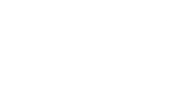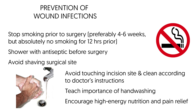The following are some ways to prevent wound infections. Teach the surgical patient to stop smoking four to six weeks before surgery; if they cannot quit, there is absolutely no smoking for 12 hours before surgery. The patient should shower before the operation using antiseptic soap recommended by the doctor and avoid shaving the skin area where the operation will occur. Following surgery, the patient should avoid touching the incision site and clean it according to their doctor's instructions. Educate on the importance of hand washing for the patient, visitors, and all caregivers, and encourage high energy nutrition and pain relief.